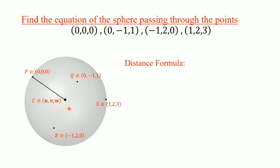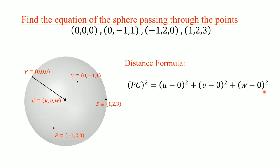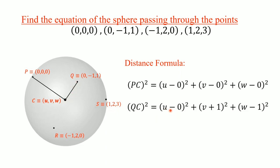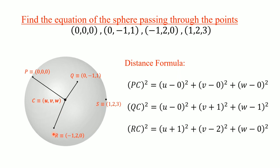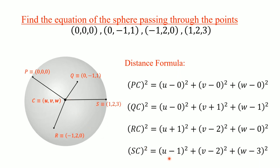By the distance formula, the distance between C and P gives: PC² = (u − 0)² + (v − 0)² + (w − 0)². Similarly, QC² = (u − 0)² + (v + 1)² + (w − 1)². For C and R: RC² = (u + 1)² + (v − 2)² + (w − 0)². And for C and S: SC² = (u − 1)² + (v − 2)² + (w − 3)².